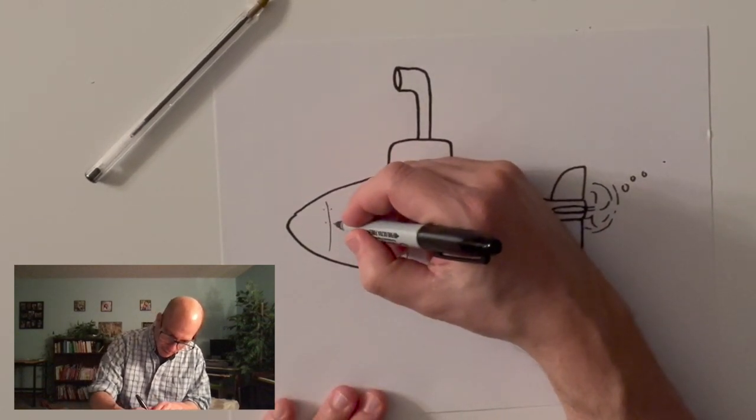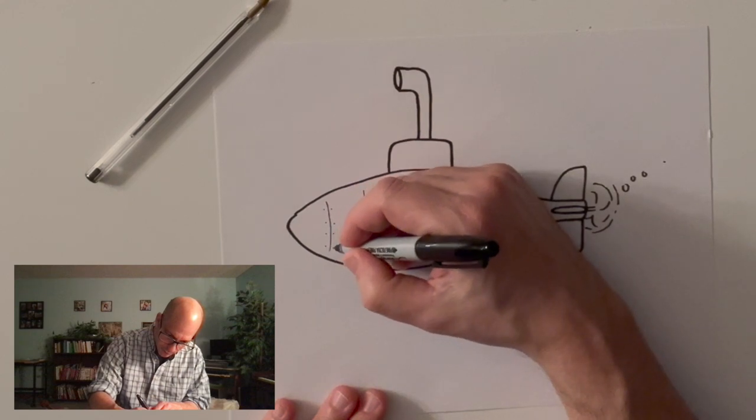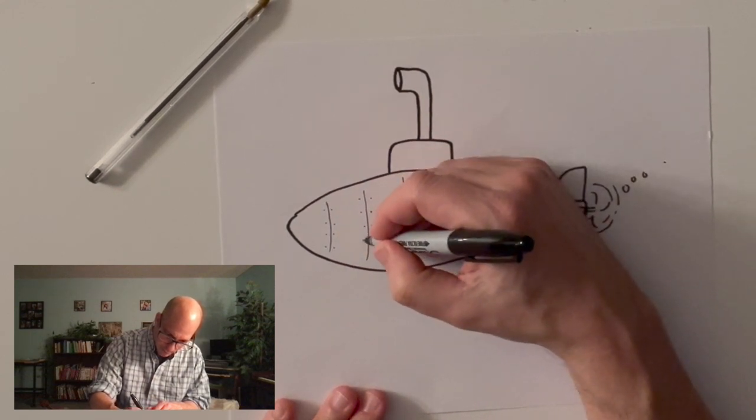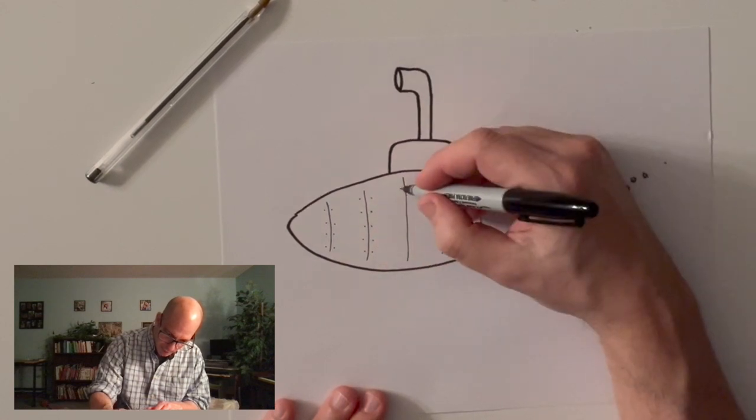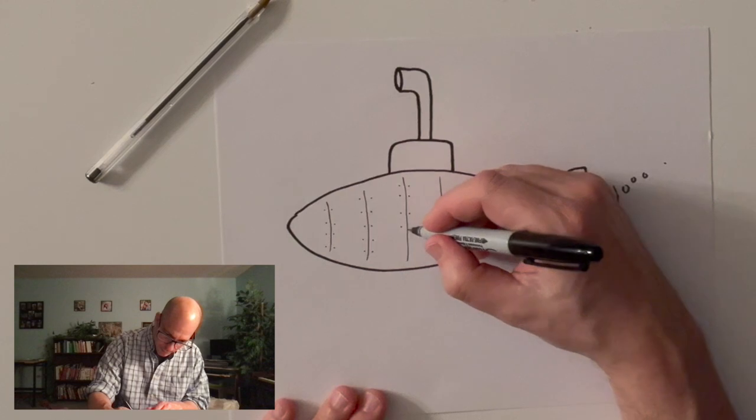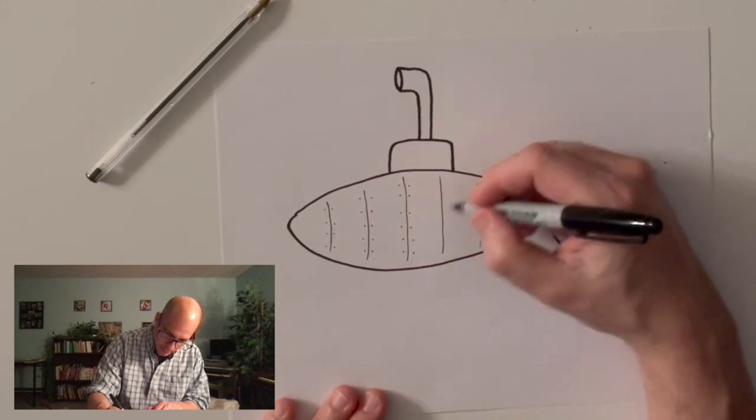So to indicate that, I like to put these kind of pop rivets, this pattern that shows that, you know, this thing is made out of parts.